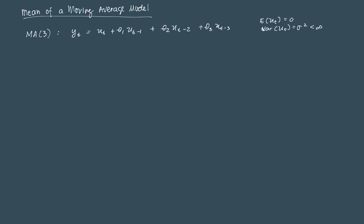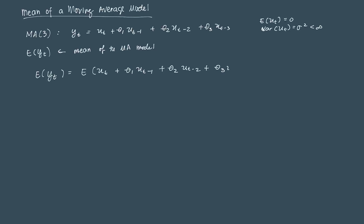So let's first demonstrate what the mean of a moving average model is. We're just trying to get the expected value of Yt, and this corresponds to the mean of the MA model. In order to do that, let's just apply the expected value operator to this model. So we calculate the mean of Yt. For algebraic simplicity, let's omit the model intercept for now. So that's E[Yt] = E[Ut + Theta1 Ut-1 + Theta2 Ut-2 + Theta3 Ut-3].